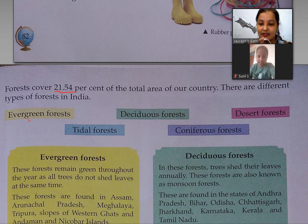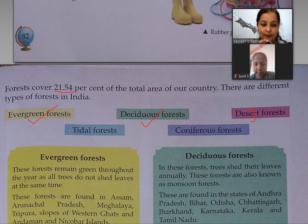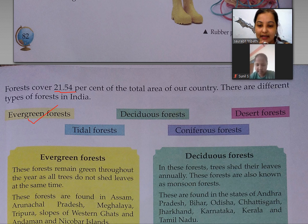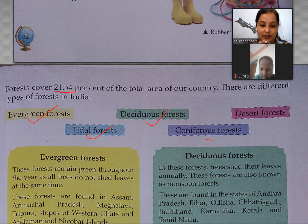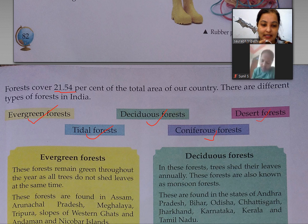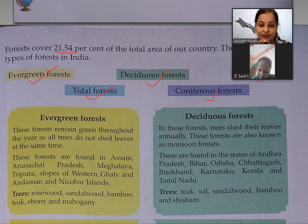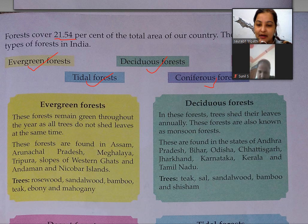The different types of forests in India are: evergreen forest, deciduous forest, desert forest, tidal forest and coniferous forest. Ab hum iske baare mein padhenge.